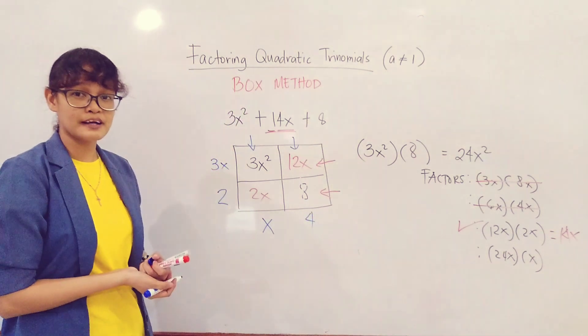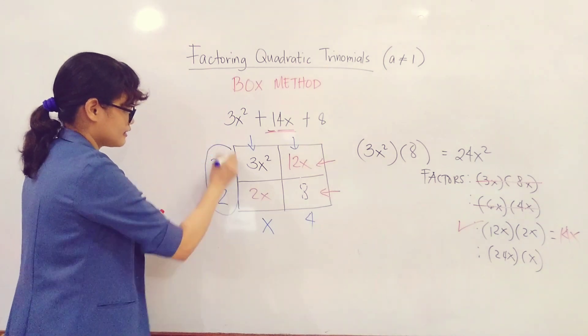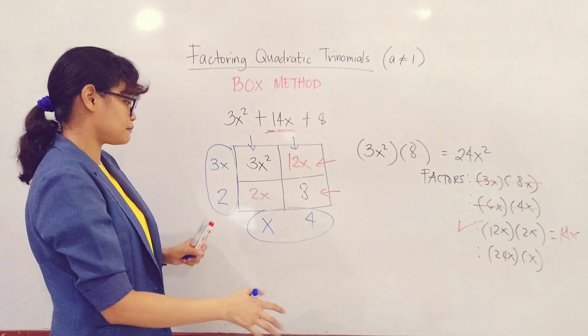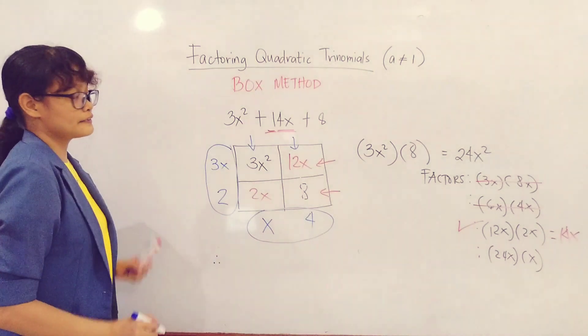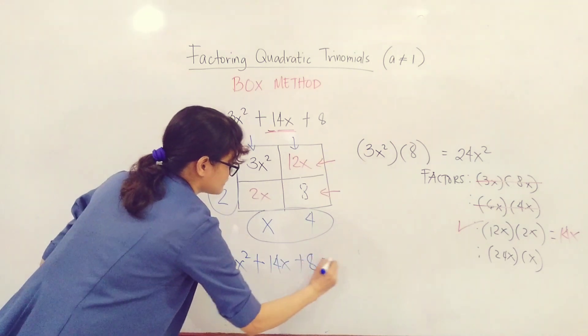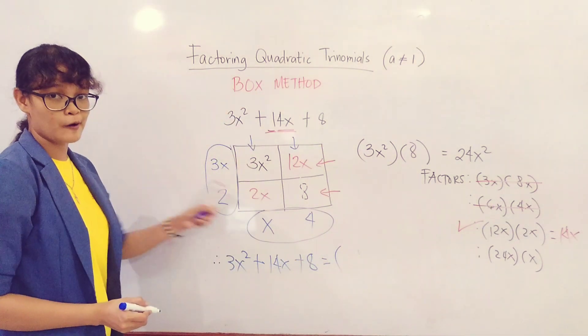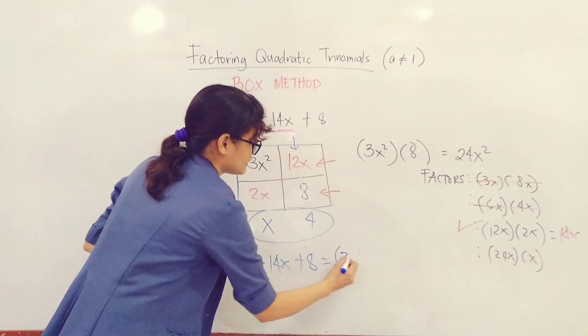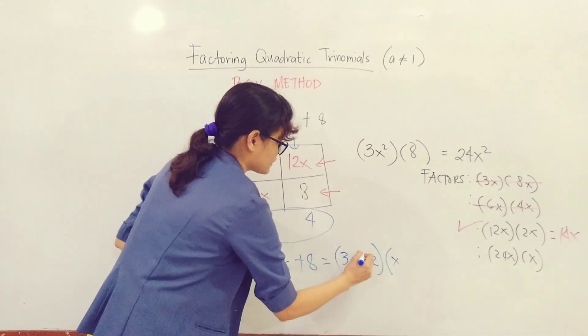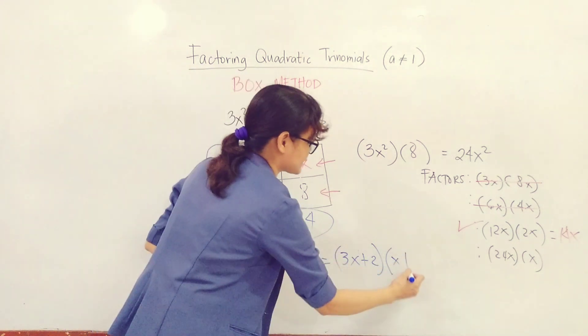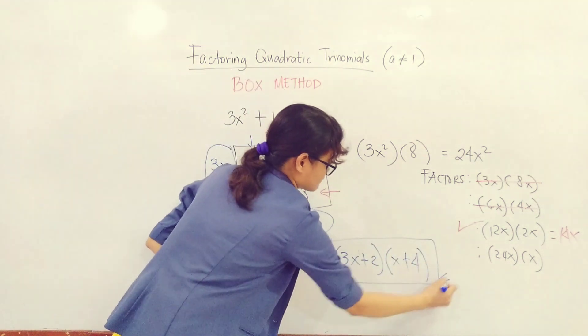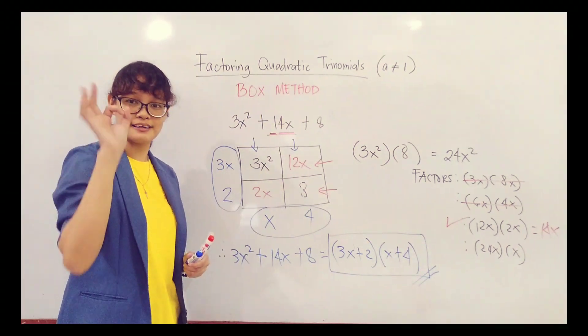Next, for columns. What about 3x² and 2x? What's their common factor? You have x. Next, you have 12x and 8. What's their common factor? It is 4. So we have the factors. And they're all positive because it's positive here. So therefore, we can say that 3x² + 14x + 8 is just equal to the product of these two factors: (3x + 2)(x + 4).